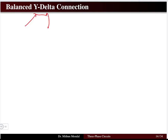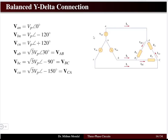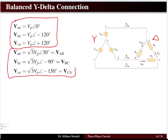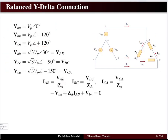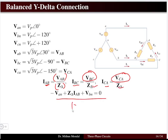The next system is the star-delta connection — the source is star-connected and the load is delta-connected, and the system is balanced. With the ABC phase sequence, we can write the source voltages for all three phases. The line voltage is root 3 times the phase voltage with a 30-degree angle difference, as already established for the star-connected system. We then find the current flowing between lines A and B as voltage V_AB divided by the delta-connected impedance.